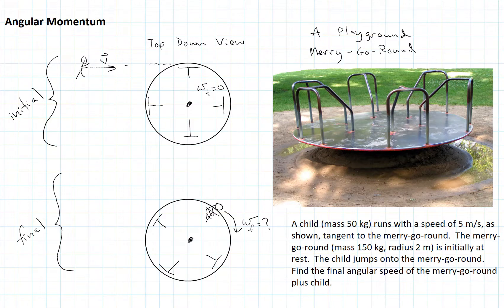I've put some numbers in here. We've got a 50 kilogram child running at 5 meters per second as shown in the image. They jump and land on the merry-go-round, which is initially at rest, and we want to know what's omega final.